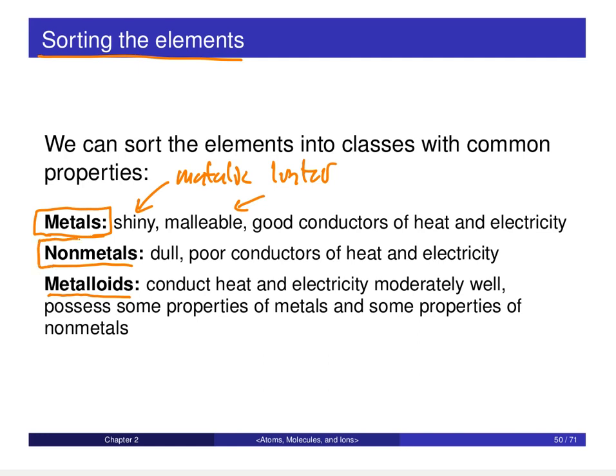Nonmetals are kind of the opposite of metals in many ways. They are typically dull — not shiny — and they're poor conductors of heat and electricity. Sometimes we'll see that they're actually brittle as well. When classifying metals and nonmetals, we are talking in general, and there are some exceptions to these rules, but by and large metals and nonmetals are characterized by these properties.